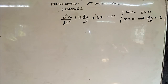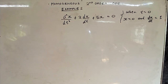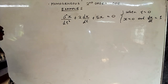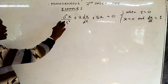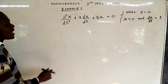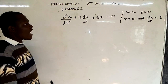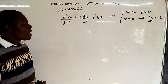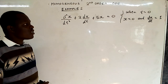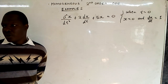Example number 2 on homogeneous second order ODE. You'll be told to solve the differential equation using the method of undetermined coefficients: d squared x over dt squared plus 2 dx over dt plus 5x equals 0.